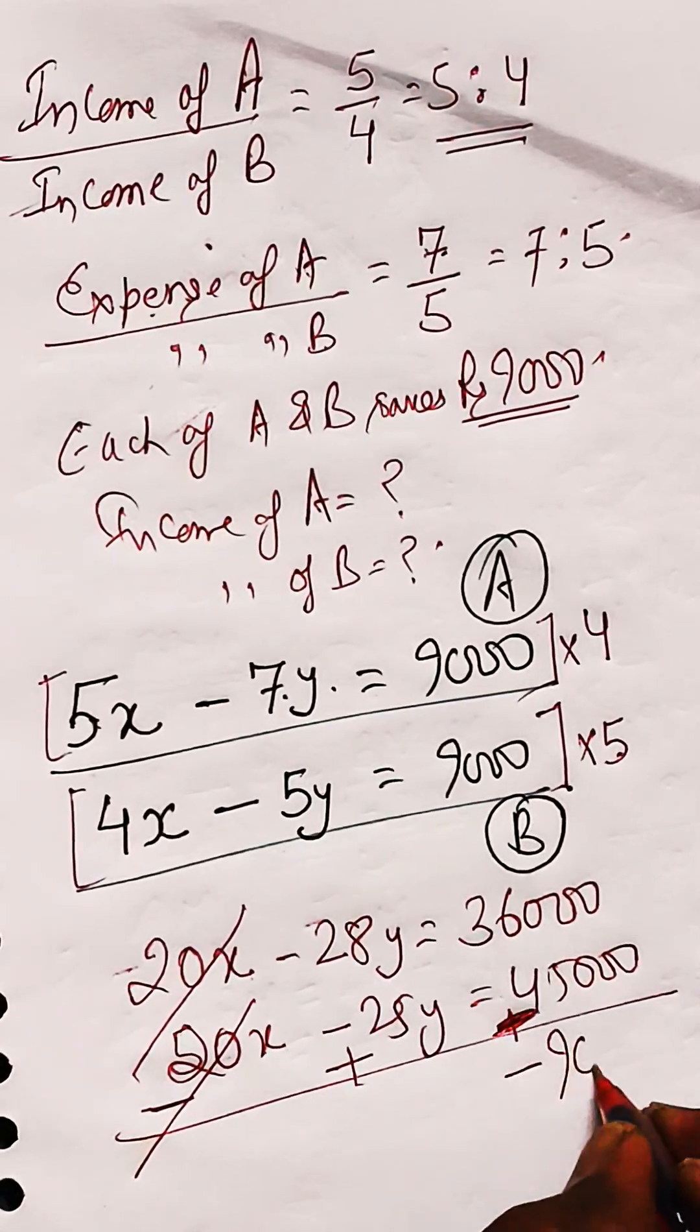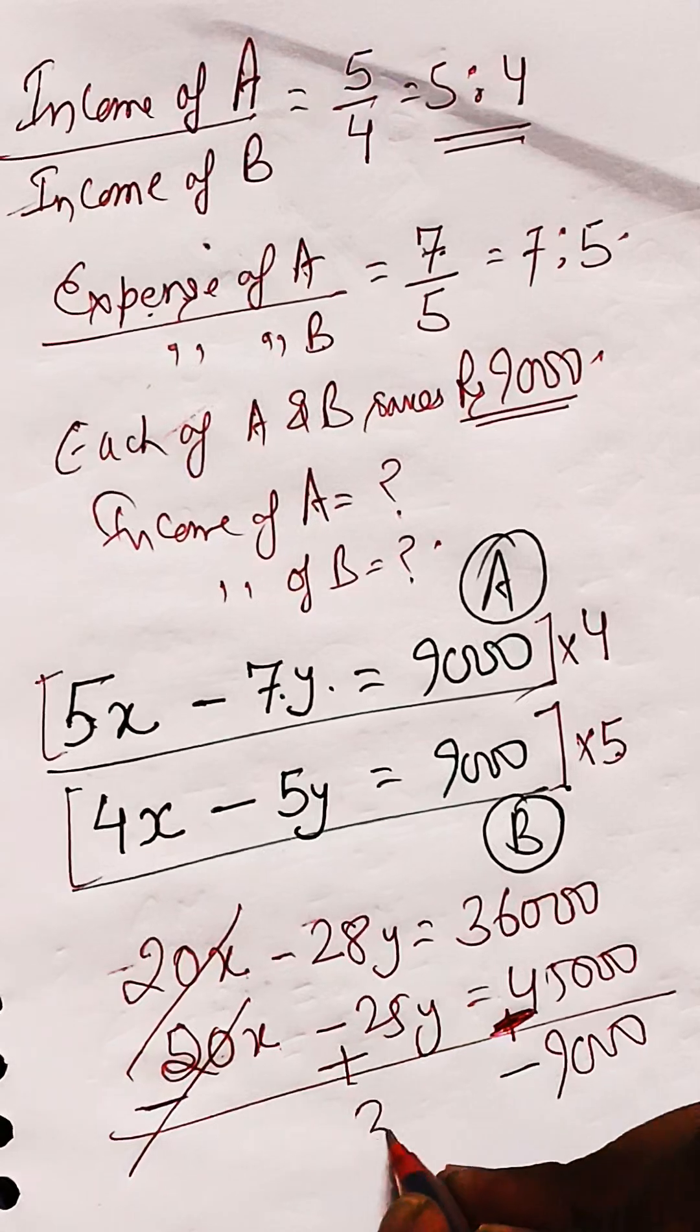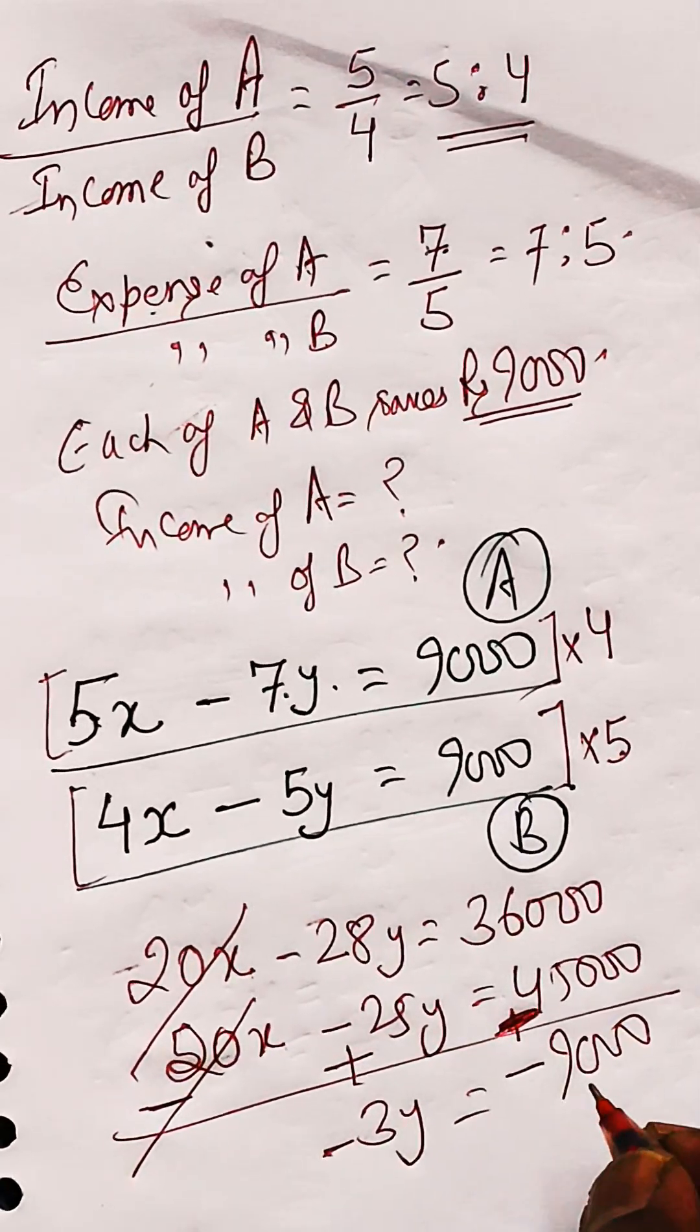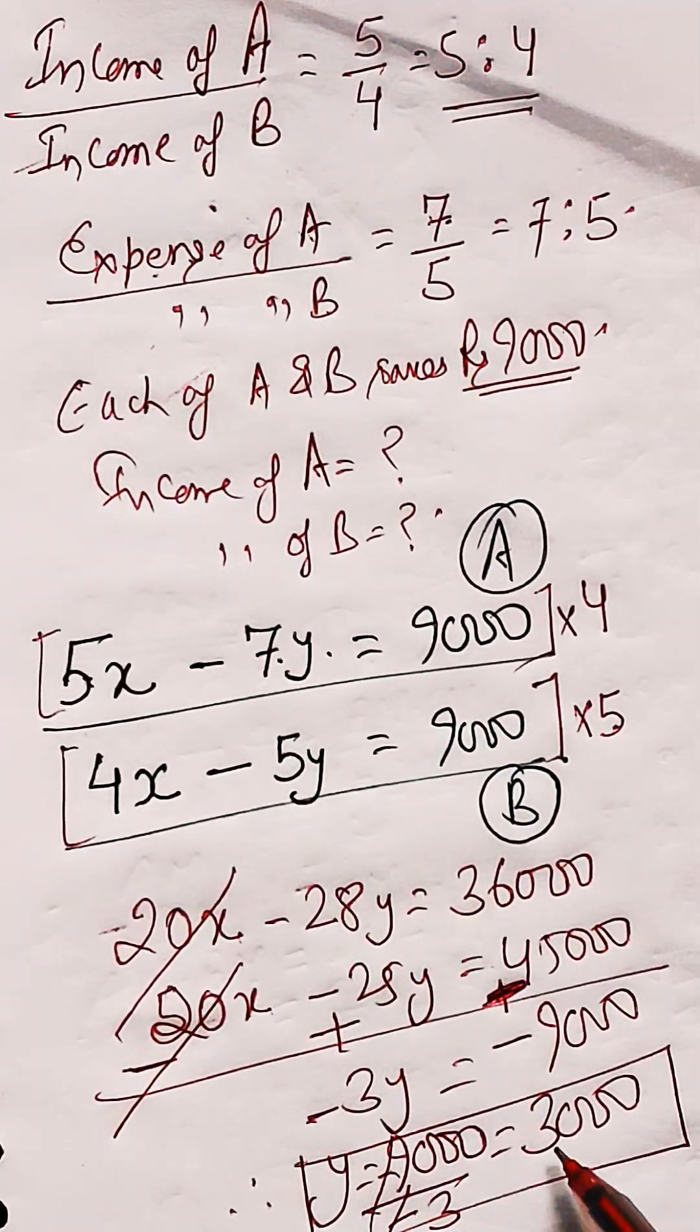We are left with minus 3y equals minus 9000. You solve to get the value of y as 3000.